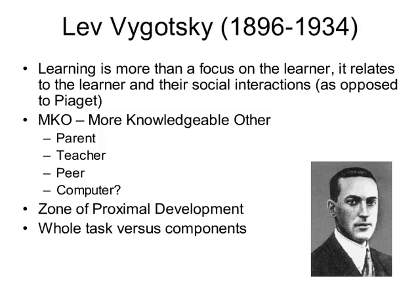The zone of proximal development is a key construct — it is an area of knowledge expertise. There's a nice graphic in the chapter where the things that you know are yellow and the things that you don't know are orange. The zone is a gradient from yellow to orange, your zone of proximal development. The things that are mostly yellow are things that you can do but need a little bit of help with from your more knowledgeable other.